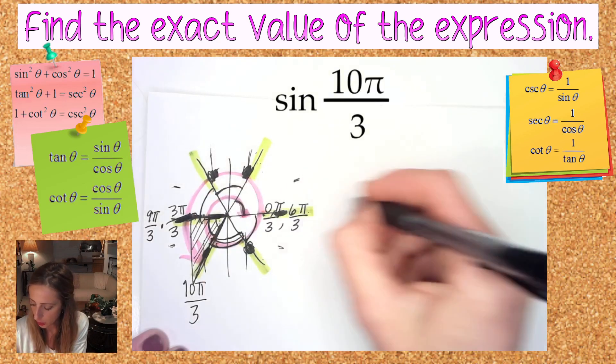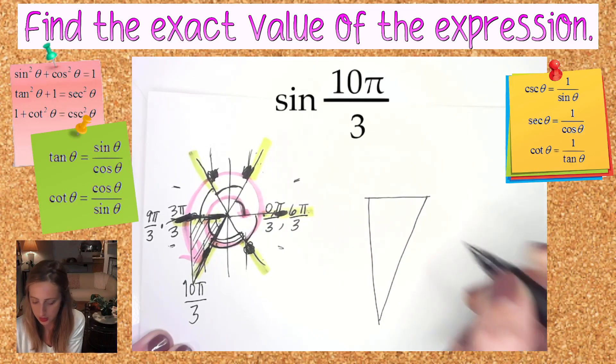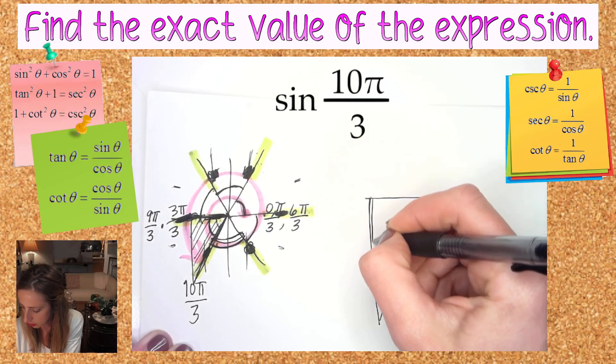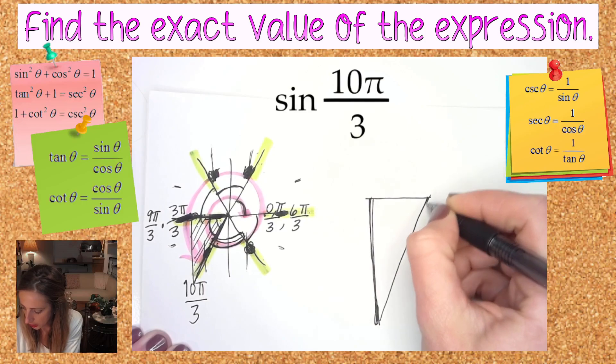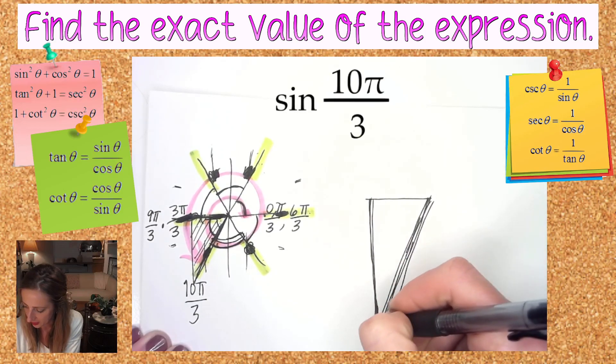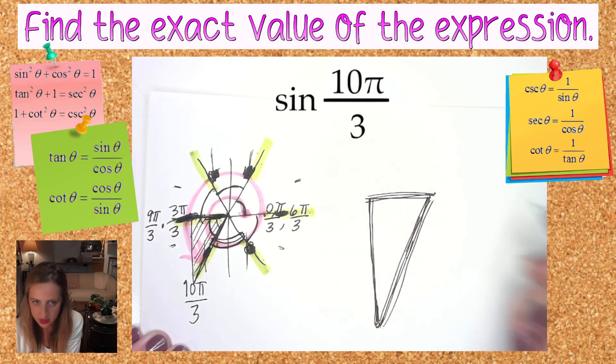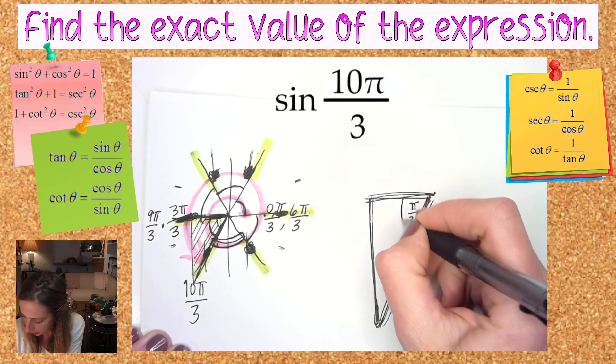So all the measurements that correspond to this reference triangle will match up with quadrant 1's π over 3. I'm just going to blow up this triangle right over there. This angle is π over 3, the reference angle. This is 90 degrees.